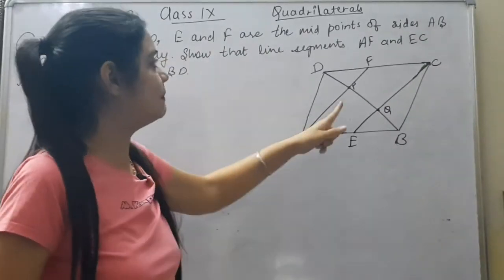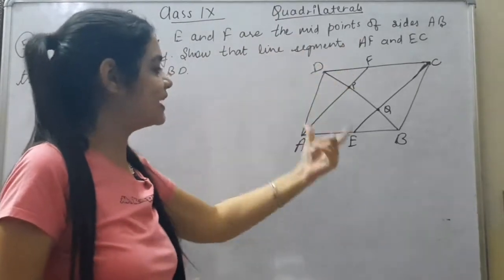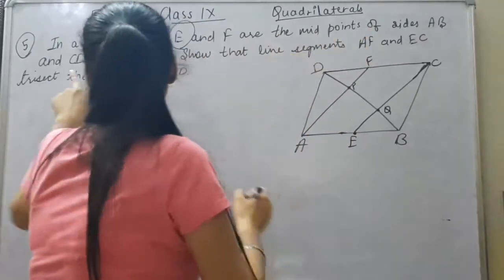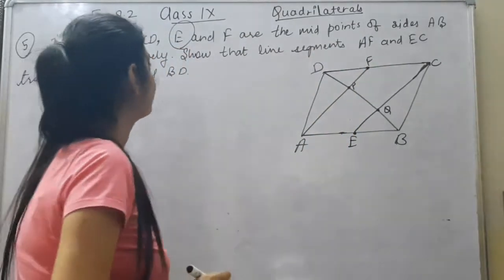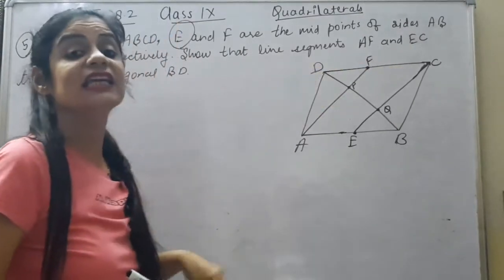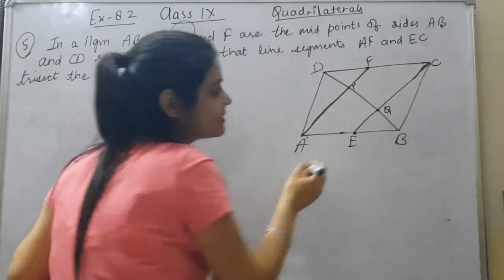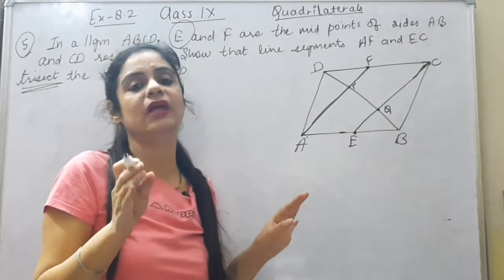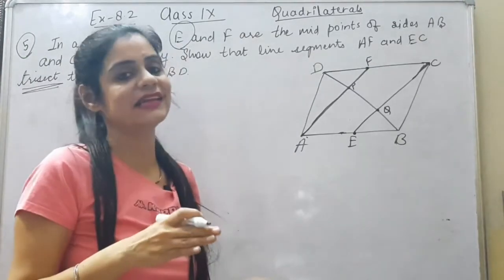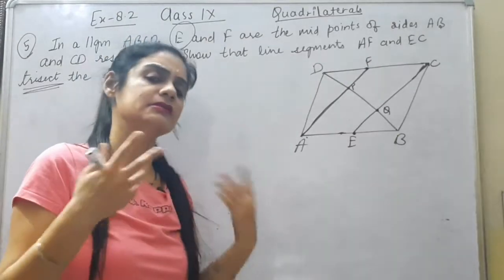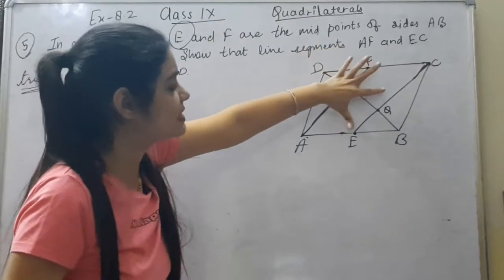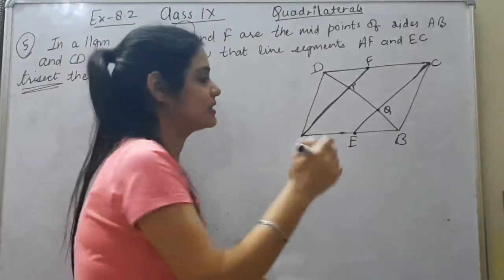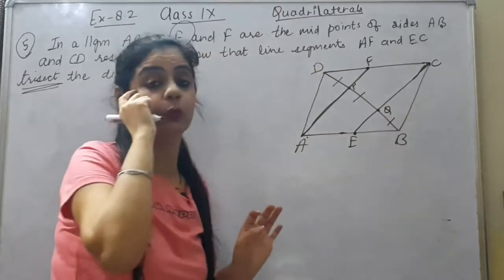In parallelogram ABCD, E and F are the midpoints of sides AB and CD respectively. We have to show that line segments AF and EC trisect the diagonal BD. The trisect word — we have never heard it before. Trisect means dividing into three equal parts, just like bisect means dividing into two equal parts. That means I have to prove DP = PQ = BQ.